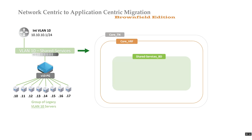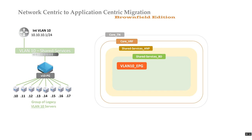So I created my shared services bridge domain as part of the core VRF. Then I create other constructs like a shared services application profile containing the endpoint group. For migration reasons, I will use the VLAN ID and VLAN name from the legacy traditional network in ACI — it helps identify exactly which networks I'm migrating and eliminates human error. This EPG is temporary and will eventually go away as we move to an application-centric model.